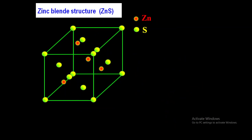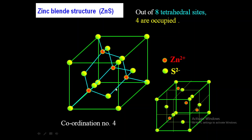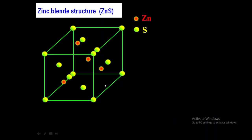Now we will see how to establish the relation between the side of the unit cell and the atomic radius. This is a zinc blende structure and it is a cubic structure, so all sides are equal: parameters a = b = c, all sides are a, and all angles are 90°. We will establish the relation between the radius of zinc and sulfur atoms and the side of the unit cell — the edge length a.